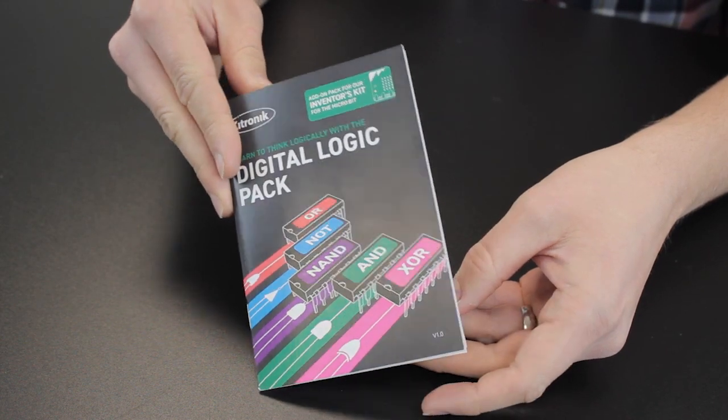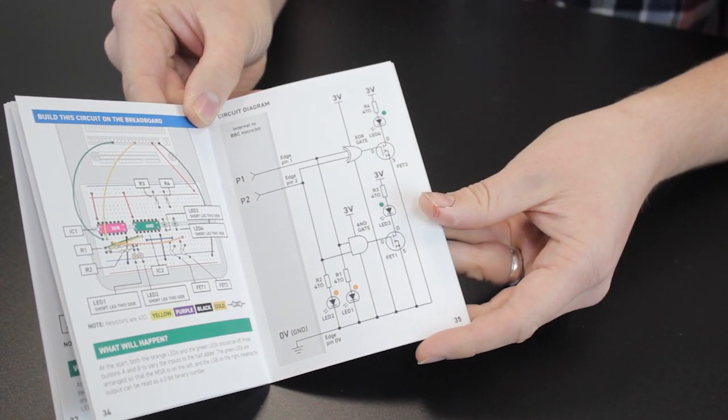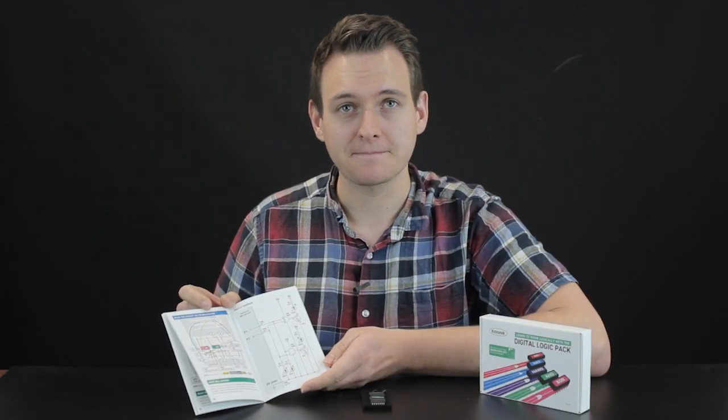The second section of the booklet contains some more advanced experiments that combine some of the digital logic gates together to form some of the basic building blocks that you'd find in a computer today.